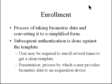The enrollment process takes biometric data and converts it to a simplified form. You can simplify an iris scan or fingerprint down to a representation as small as 1K in size. Subsequent authentication to gain access is done through the template, and the user may need to enroll several times to get a clean template.